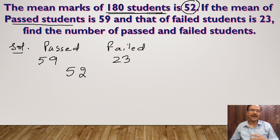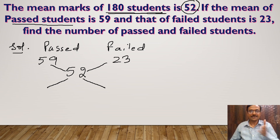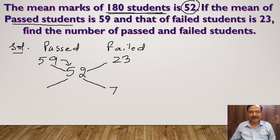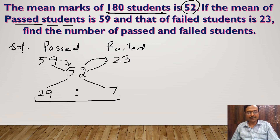I'll set up the allegation diagram, drawing lines across. Now I take the diagonal differences: 59 minus 52 gives me 7, so I write 7 here. And 52 minus 23 — you subtract the smaller from the larger — gives me 29, so I write 29 here.